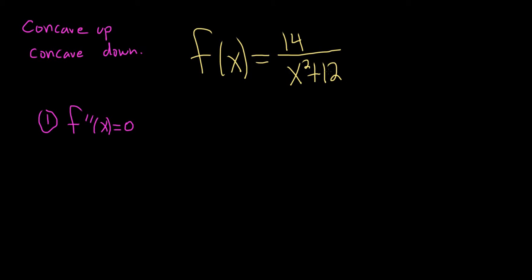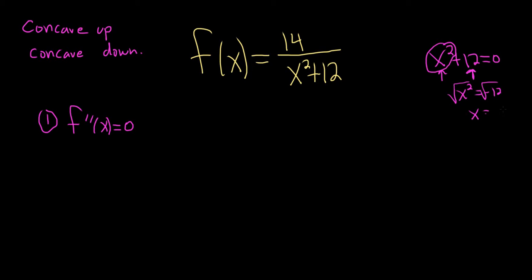This function is never undefined. The bottom piece, x squared plus 12, can never be equal to 0 because x squared is always positive or 0, and 12 is positive, so when you add something that is positive or 0 to a positive number it can never be 0. Also if you try to solve for x you get the square root of a negative number, so the bottom will never equal 0 and there are no domain issues.